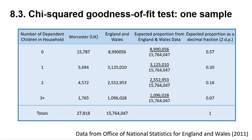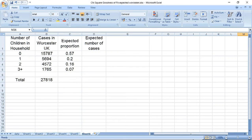We can now use the proportions given in column 5 to allow the programme to calculate expected values, so we can test the hypothesis that there is no difference between the distribution of dependent children in households in Worcester compared to the expected distribution found in England and Wales. So let's do the test in Excel.